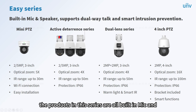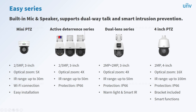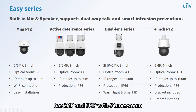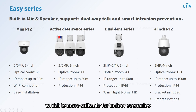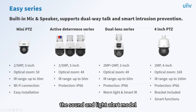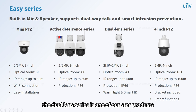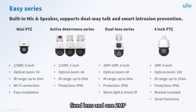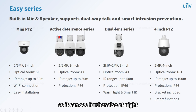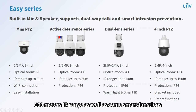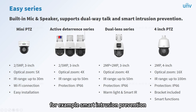All products in this series are built-in mic and speaker and support dual-way talk. The mini PTZ has 2MP and 5MP with 5x zoom and supports Wi-Fi connection, making it more suitable for indoor scenarios. The active deterrence series has three models: the sound and light alert model, ordinary alert model, and Wi-Fi model — all with IR range up to 50 meters. The dual-lens series consists of one 2MP fixed lens and one 2MP 4x optical zoom lens with IR range up to 50 meters. The 4-inch PTZ supports 16x zoom, 100-meter IR range, and smart functions including smart intrusion prevention.